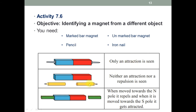When you take the pencil, you will not observe any attraction or repulsion. When you take the unmarked magnet towards the North pole, you will observe repulsion. And when you take it towards the South pole, you will observe attraction. Thus, the power of repulsion of magnets can be used to identify a magnet from other objects.